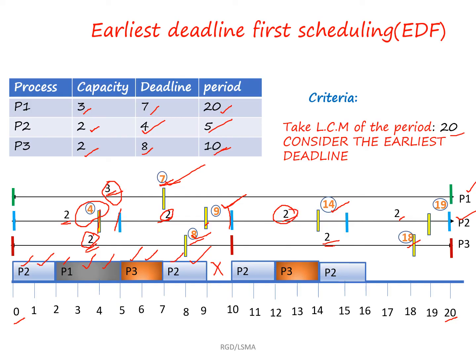We then check the next earliest deadline: P3 has deadline 18 and P2 has deadline 19. So P3 is allocated 2 units before deadline 18. After that, only P2 remains with deadline 19, so P2 is assigned 2 units before deadline 19, completing the scheduling process.